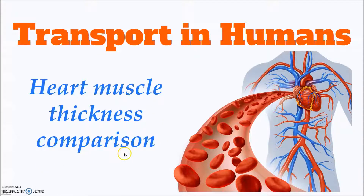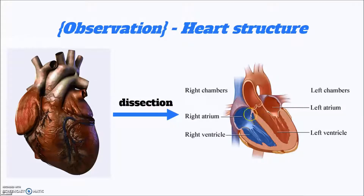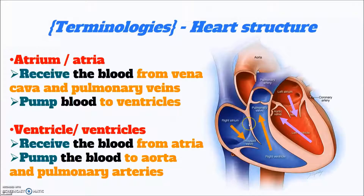We are going to use the comparison of the heart muscle thickness as an example. First of all, remember the first step of scientific investigation is observation. Imagine you are a scientist dissecting the human heart. After the dissection, you can see that there are four heart chambers. We can name them: two of them are the atria and two of them are the ventricles. The basic function of these chambers is to receive and pump blood.